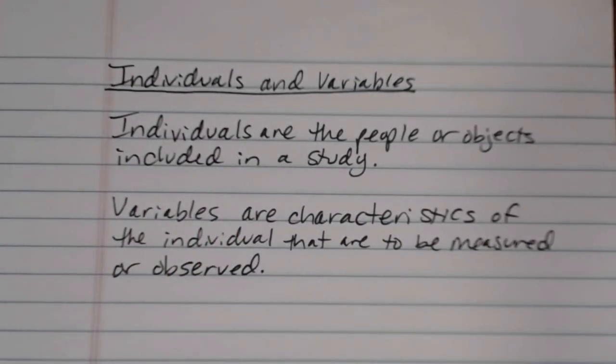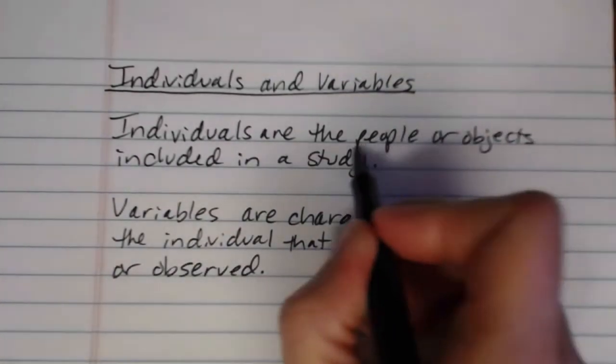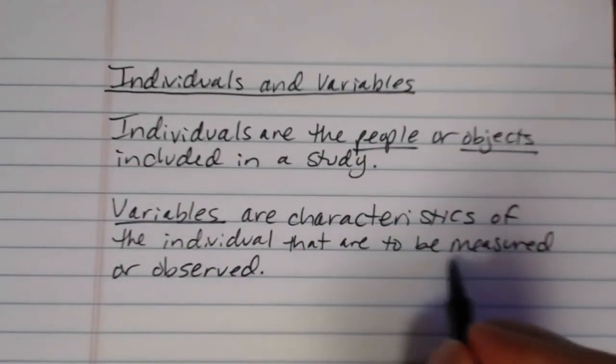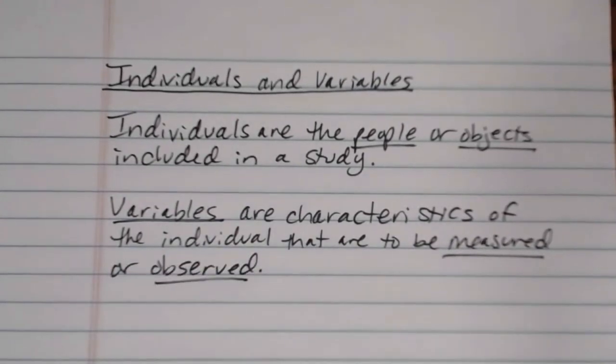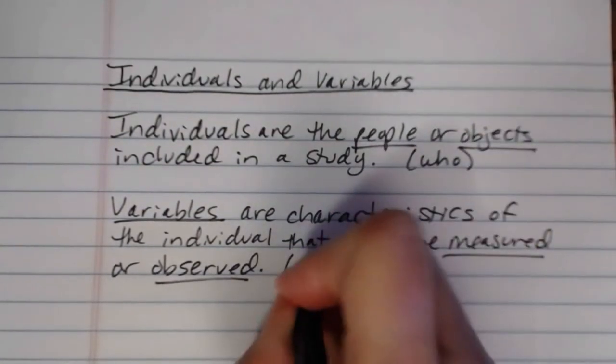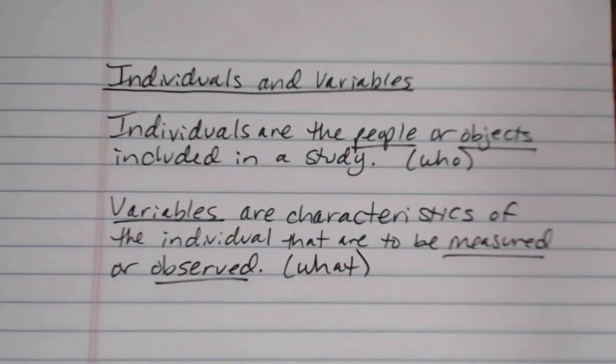So that's the difference between individuals and variables. Individuals are the people or objects that we include, and variables are actually the things that we measure or observe about those people or objects. So this is essentially the who, and this is the what, if you want to think of it in that context.